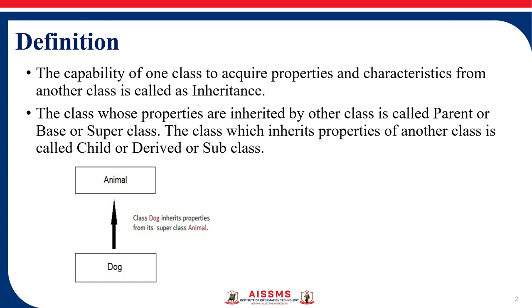In inheritance, we have three different access specifiers: private, public, and protected. Except for private, all other members or member functions that are in protected or public mode are inherited in the derived class. The private members of any class cannot be inherited.